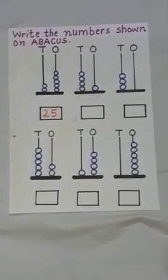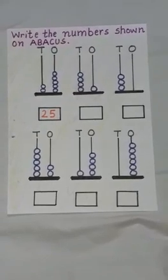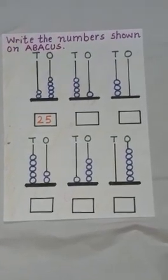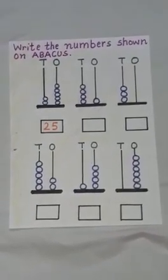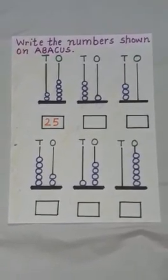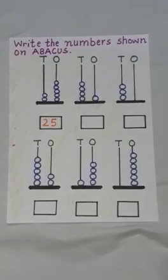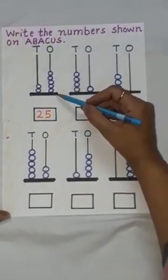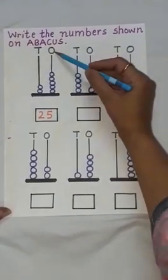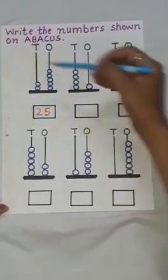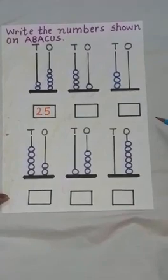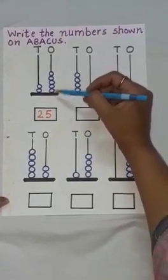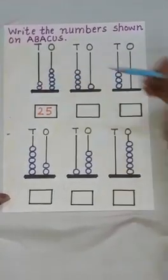In the earlier video, we had learnt how to read a number using tens and ones. Dear children, now to practice more, let us learn how to write a number on an abacus. Look at the first abacus. Here, we have some beads at the ones place and some beads at the tens place. First of all, we will count the number of beads at the ones place and then at the tens place. Let us begin.